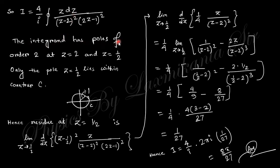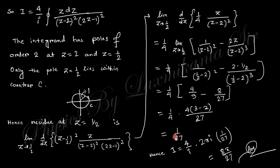The integrand has a pole of order 2 at z = 1/2 (inside the unit circle) and a pole of order 2 at z = 2 (outside the unit circle). Only z = 1/2 lies inside the unit circle, so the residue there is computed using the derivative formula for a second-order pole. The residue value gives an integral value of (4/i) × 2πi times the residue, and with only one pole inside the contour the final answer is obtained.